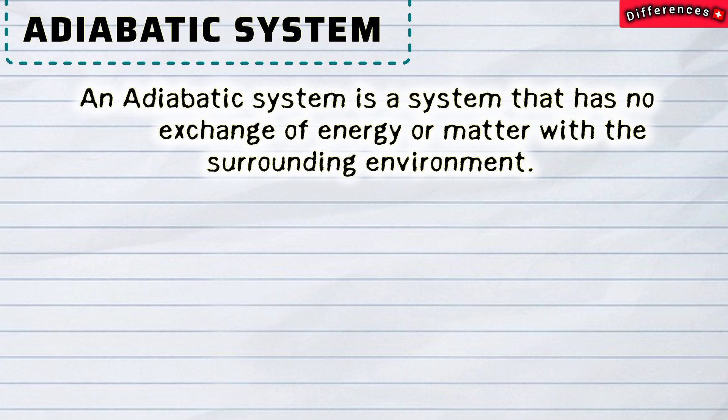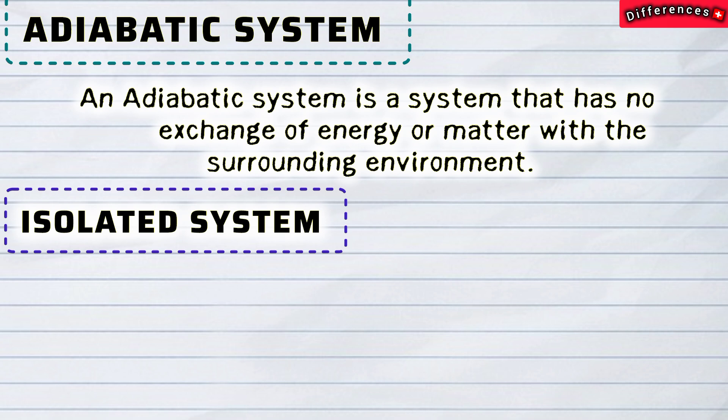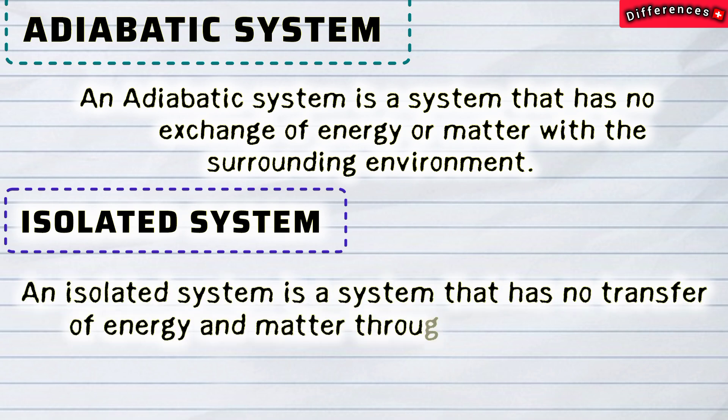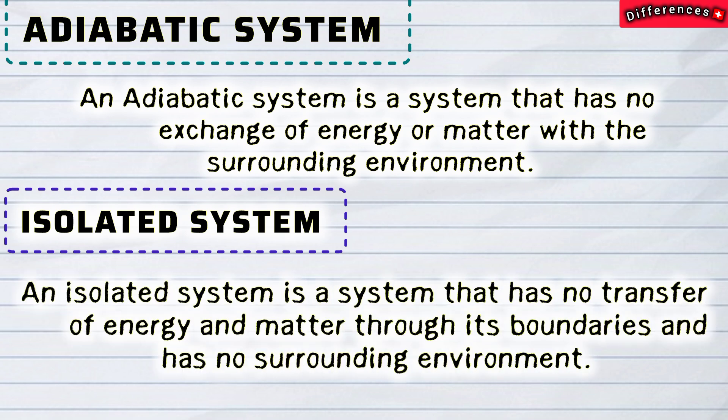Isolated system: an isolated system is a system that has no transfer of energy and matter through its boundaries and has no surrounding environment.